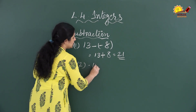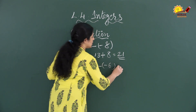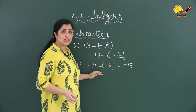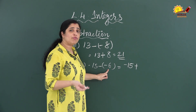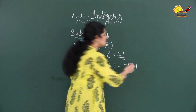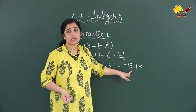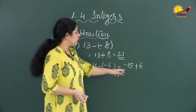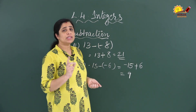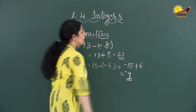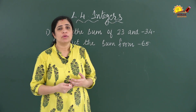Let's take one more example: minus 15 minus minus 6. The first number stays as minus 15. Change the subtraction sign into an addition sign. Write the additive inverse of minus 6, which is plus 6. Now one number is negative and the other is positive, so do the subtraction: 15 minus 6 equals 9. Keep the sign of the bigger number, which is negative, so the answer is minus 9.